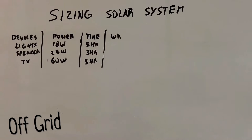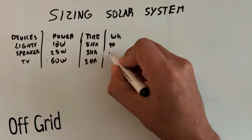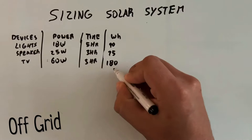Once we have that, we're going to multiply the second and third column, so 18 times 5, it's going to give us 90 watt hours, 25 times 3, 75, and 60 times 3, 180.